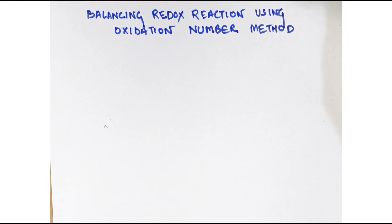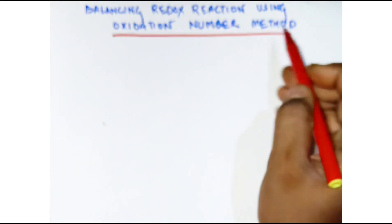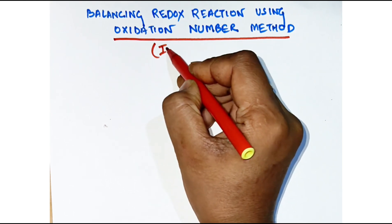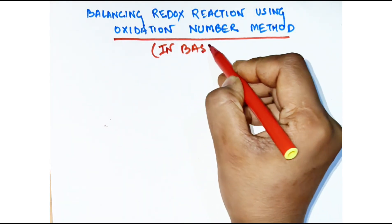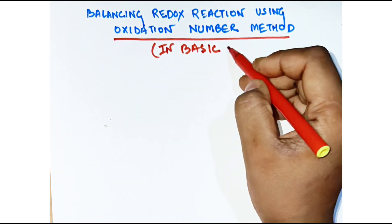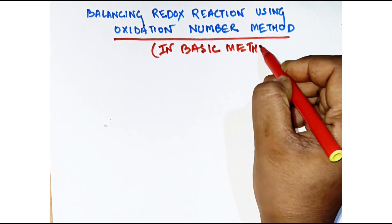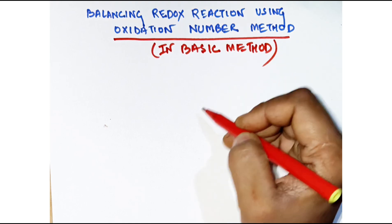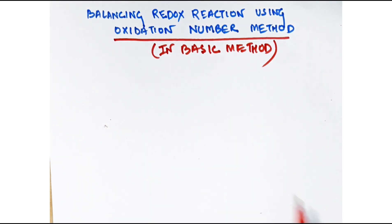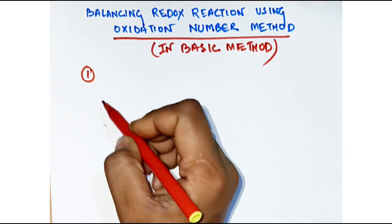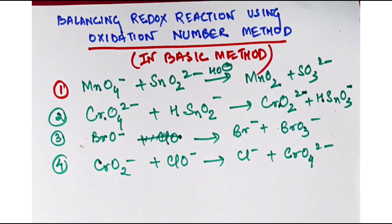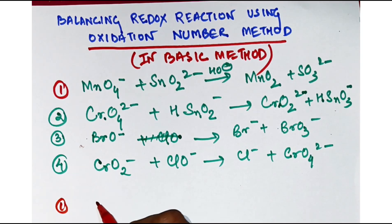Hello everyone. In this video we are going to balance redox reactions using the oxidation number method in basic medium, because acidic medium is very easy. There is always a problem with basic medium, so these are the four questions we are going to solve in basic medium.